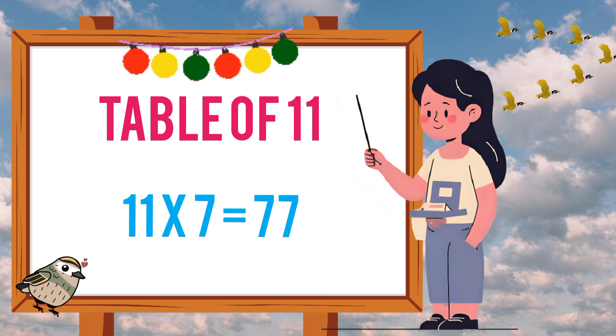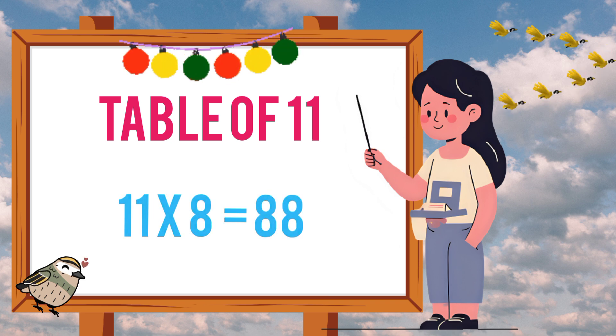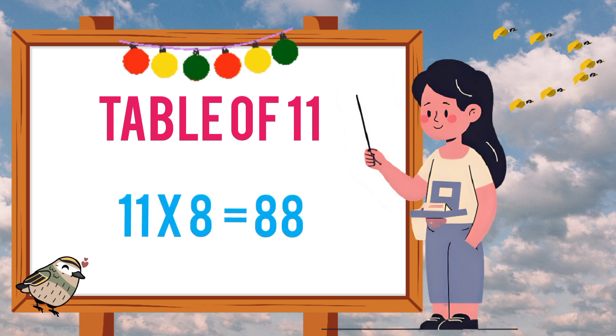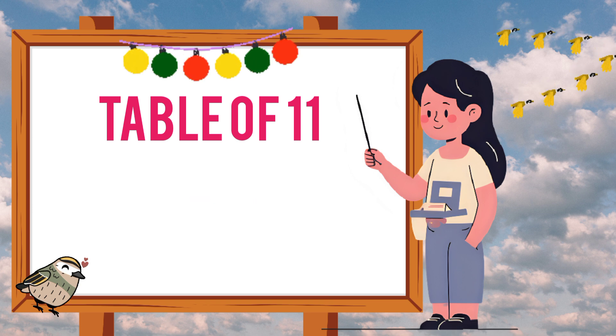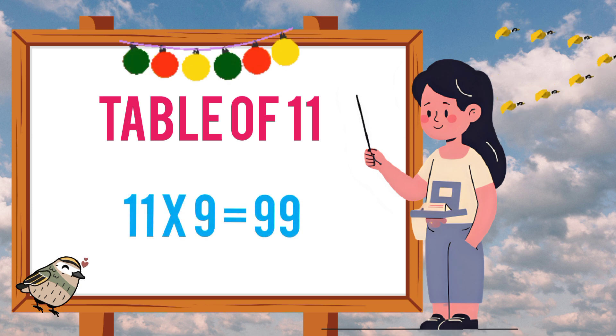Eleven sevens are seventy-seven. Eleven eights are eighty-eight. Eleven nines are ninety-nine.